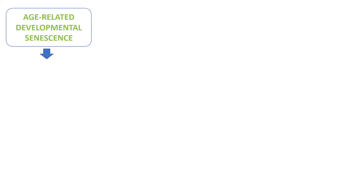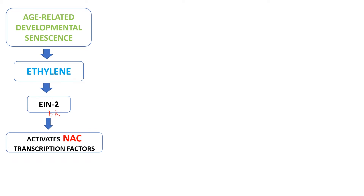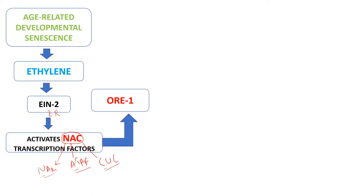In age-related developmental senescence, a very important phytohormone called ethylene activates EIN2. EIN2 is a gene present in the endoplasmic reticulum, and from there it is transferred to the nucleus. In the nucleus, EIN2 activates NAC transcription factors. NAC stands for NAM, ATAF, and CUC — where NAM means No Apical Meristem, ATAF means Arabidopsis Transcription Activation Factor, and CUC stands for Cup-Shaped Cotyledon. NAC then activates another important transcription factor called ORE1.